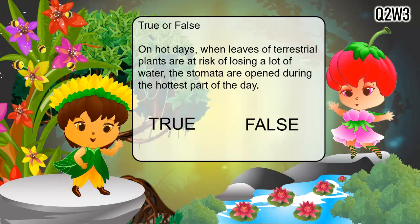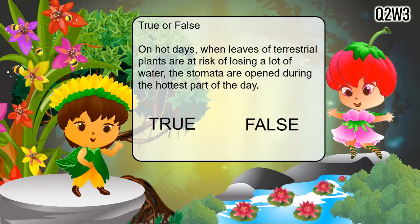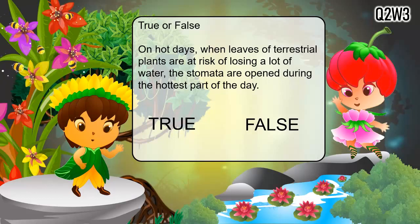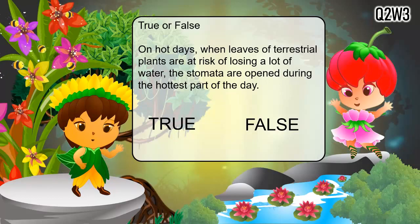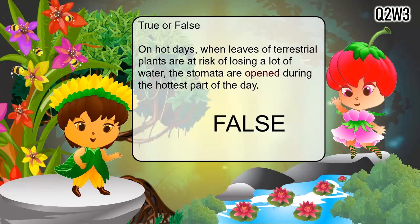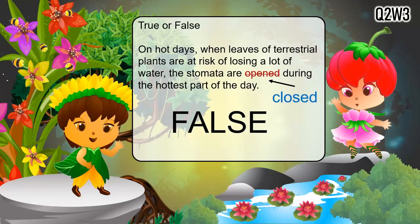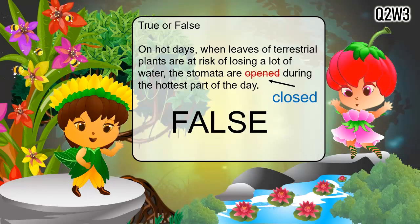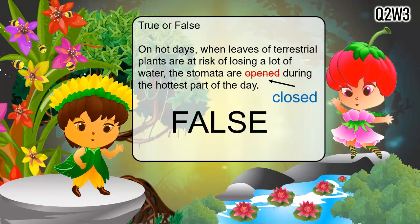True or false? On hot days, when leaves of terrestrial plants are at risk of losing a lot of water, the stomata are open during the hottest part of the day. The correct answer is false. On hot days, when leaves of terrestrial plants are at risk of losing a lot of water, the stomata are closed during the hottest part of the day.